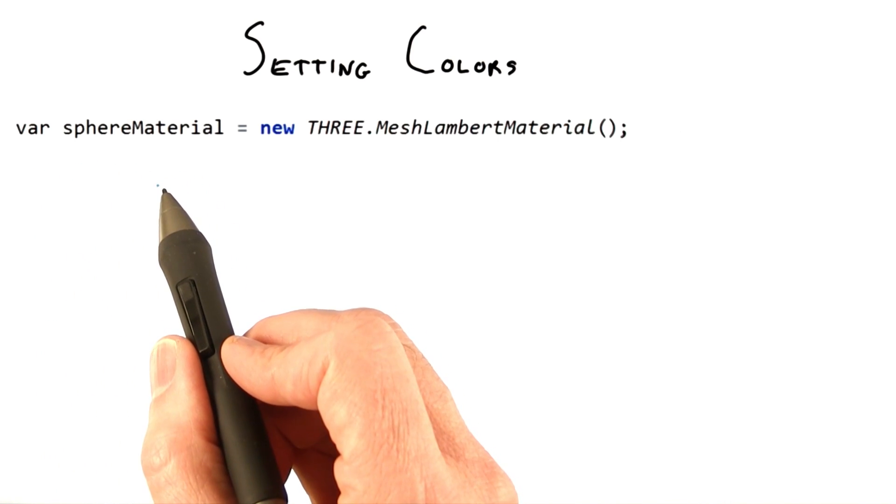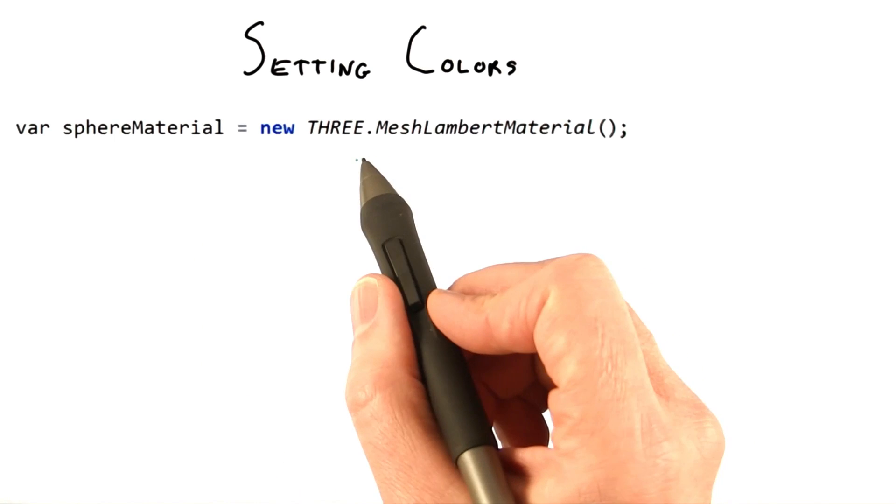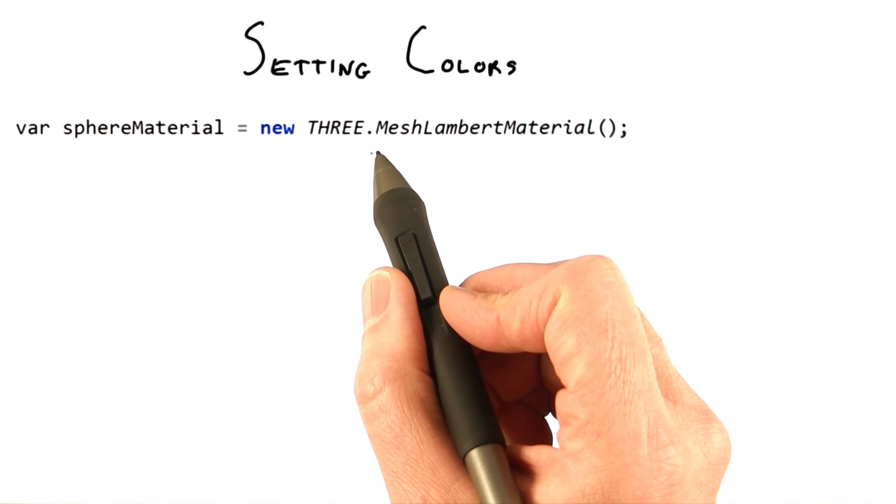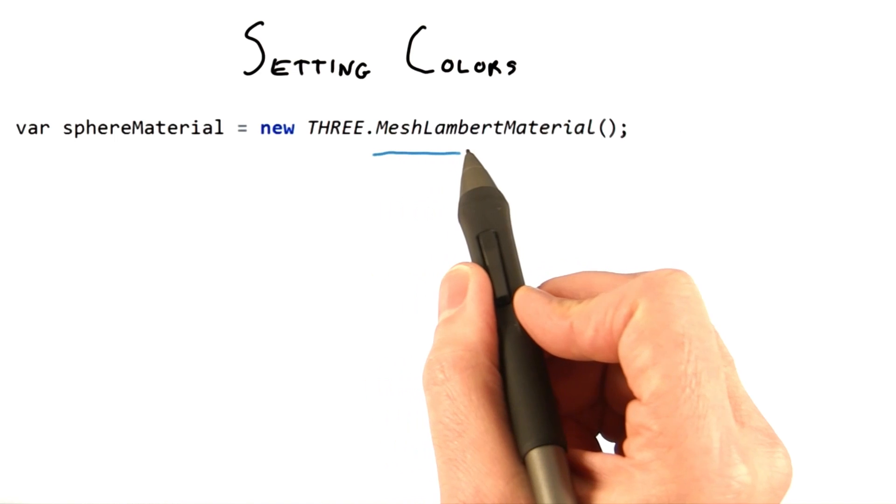You start by defining a material. We'll talk more later about what this material does. For now, just know that you can set a color for it. If you don't set any color at all, the default is white.